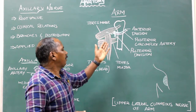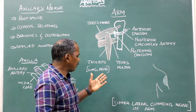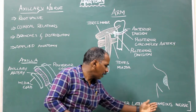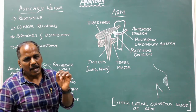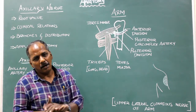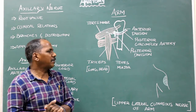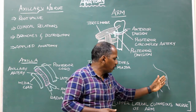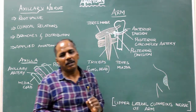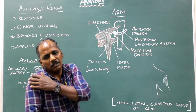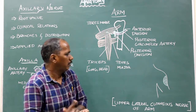Cutaneous distribution. After supplying the deltoid muscle, the axillary nerve continues as the upper lateral cutaneous nerve of the arm, which supplies the skin over the lower half of the deltoid region of the shoulder.